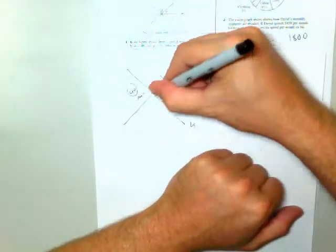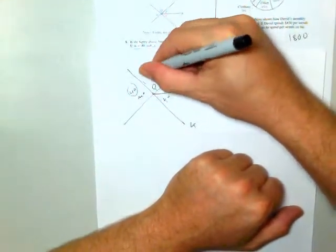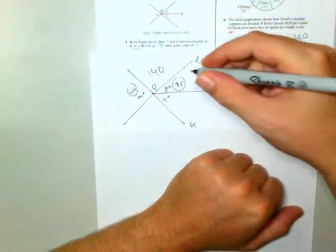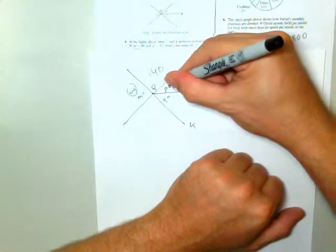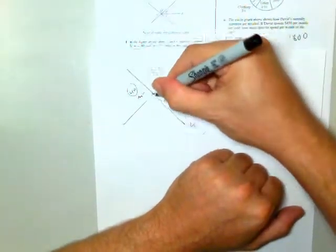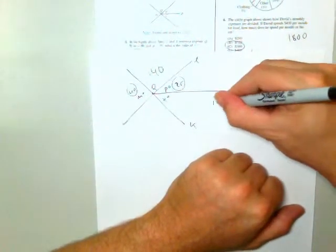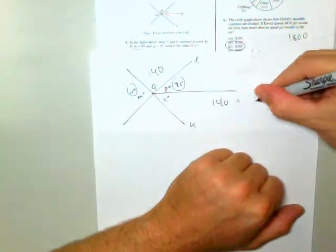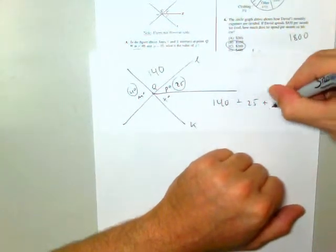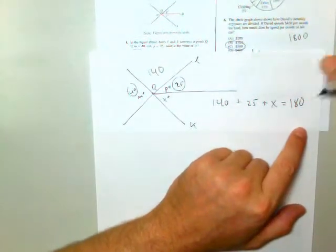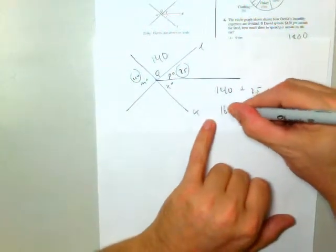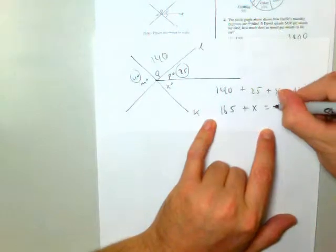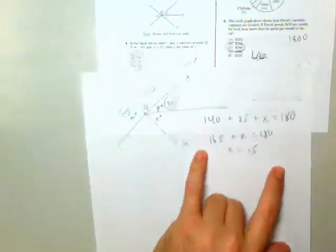Well, this is 40, then what looks like Q here must be 140. And so, basically this plus this plus this equals 180, because that's a straight line K. So I have 140 plus 25 plus X equals 180. 165 plus X equals 180, X equals 15 degrees, choice A.